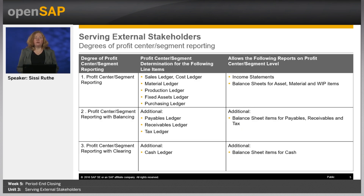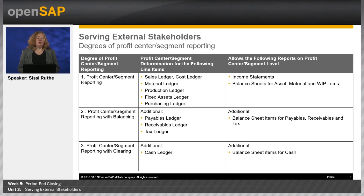In case you need to report by segments or profit center because of local or company requirements, the system can support you. Depending on your requirements, you can choose one of three degrees of profit center segment reporting. The first degree, called profit center segment reporting, assigns profit center and segments one-to-one to cost, revenue, asset, material and work in process items. In this case, no additional line items are created. This allows you to create income statements and balance sheets with asset, material and work in process items by profit center and segment.